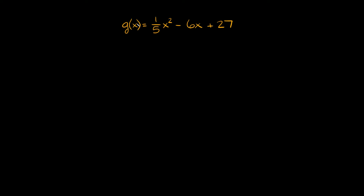Alright, let's try one more. So this is g of x is equal to 1/5 x squared minus 6x plus 27. The first thing you want to do is look at your a number again. Here it's a positive number — positive 1/5 — so that means our parabola is going to open up. In this case we're going to be looking for a minimum point right at the vertex. You can think of it like a roller coaster coming down and going back up, so this spot is a minimum. We just have to figure out what the y value is right there.